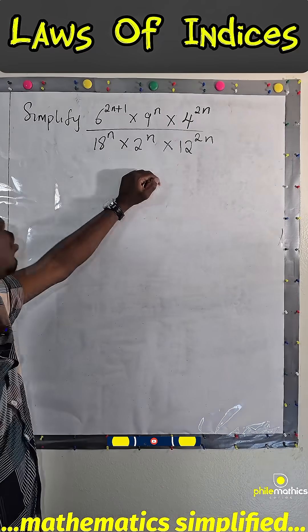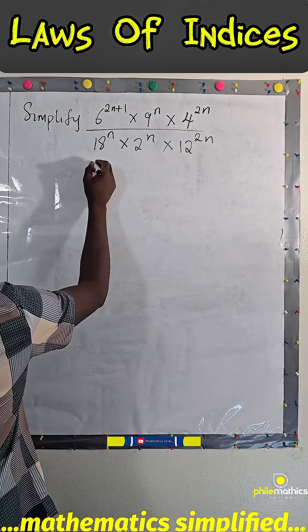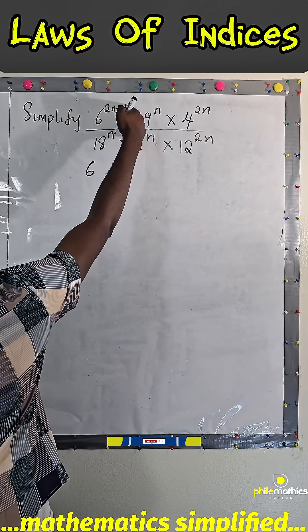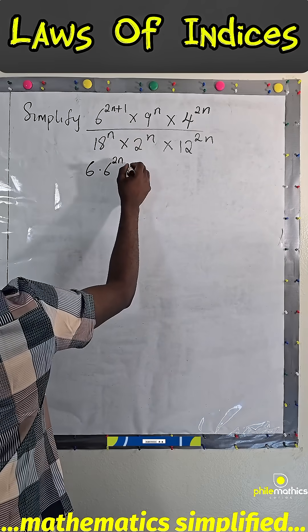How do we simplify this? Let's start by breaking this down to be 6, because this is 6 to the power 1, times 6 to the power 2n, times 6 to the power 2n, times